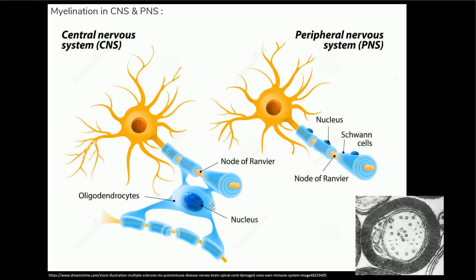In the central nervous system we have oligodendroglial cells, where one oligodendroglial cell can myelinate multiple neurons — up to 50 neurons or so. This becomes important because when you have damage to the oligos, that is concerning because one oligo can myelinate up to 50 different neurons. So it's a big blow to the central nervous system if you have a loss of just one of these cells, and certainly a marked injury if you have a loss of multiple oligodendroglial cells.